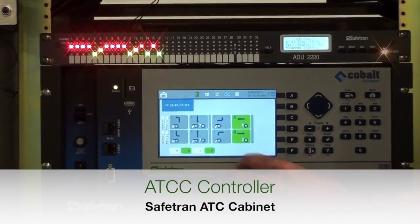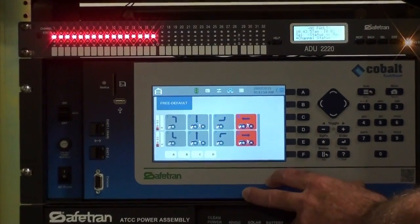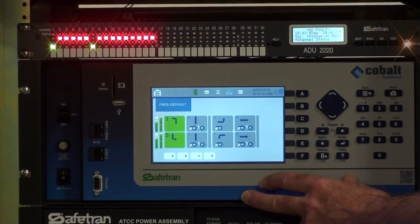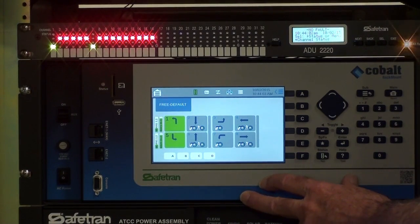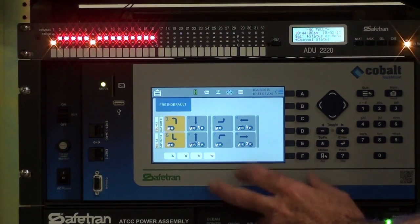The ATC cabinet is designed to work with the Cobalt rack mount controller or a 2070 controller with an Econolite 2070 1C module installed or any other ATC-compliant controller with the appropriate software installed.